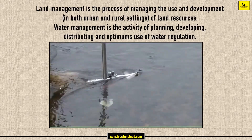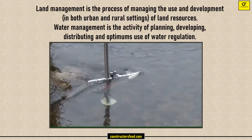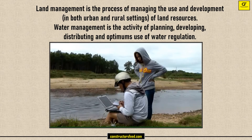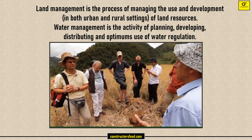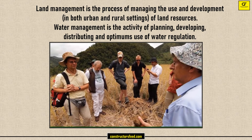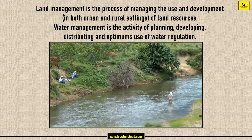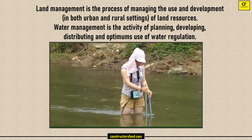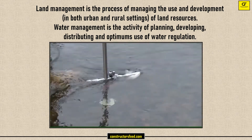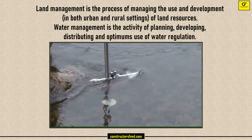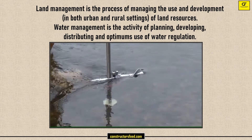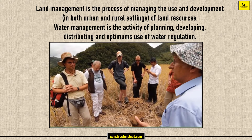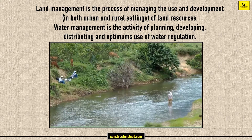Land management is the process of managing the use and development, in both urban and rural settings, of land resources. Water management is the activity of planning, developing, distributing and optimum use of water regulation.